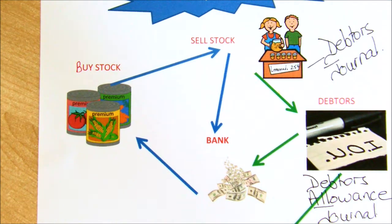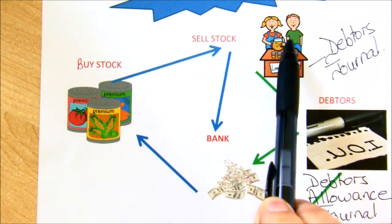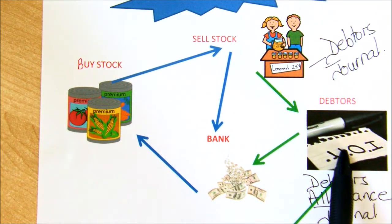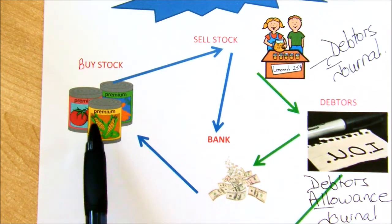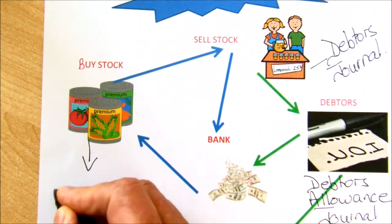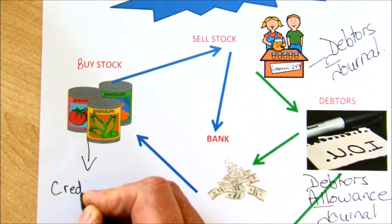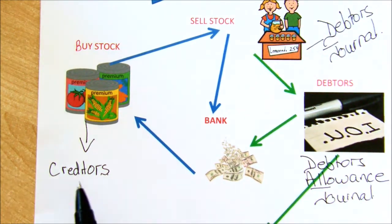In the previous set of videos we looked at selling on credit and we brought in the debtors journal and the debtors allowances journal for returns. Now when we buy our goods, it's also possible that we will buy on credit or on account. When we buy, the people that we owe the money to are our creditors — they're a liability to us.